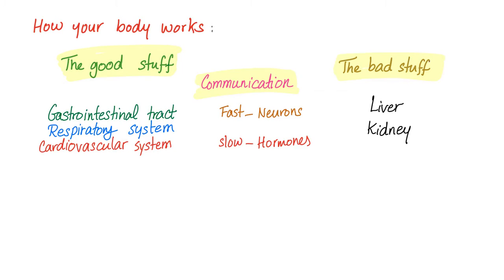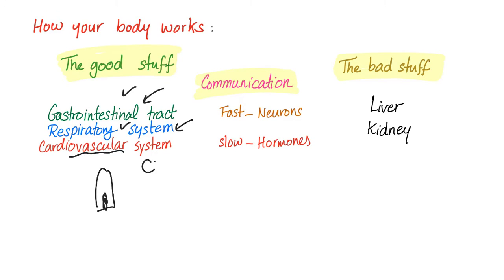To get nutrients, you need to eat — this is the gastrointestinal tract. To breathe, you need the respiratory system to get oxygen. Now, how to give food and oxygen to every single cell in your body? You need the circulatory system, or cardiovascular system, also known as CVS.